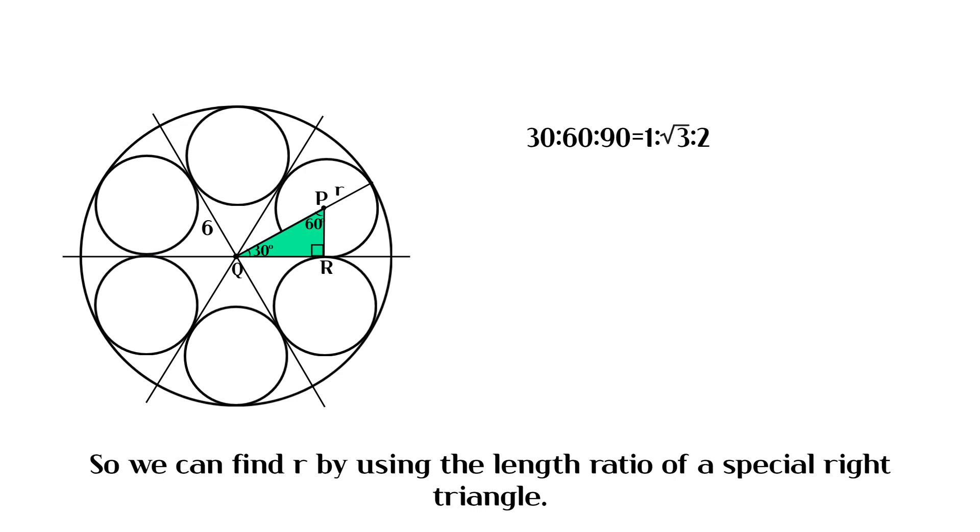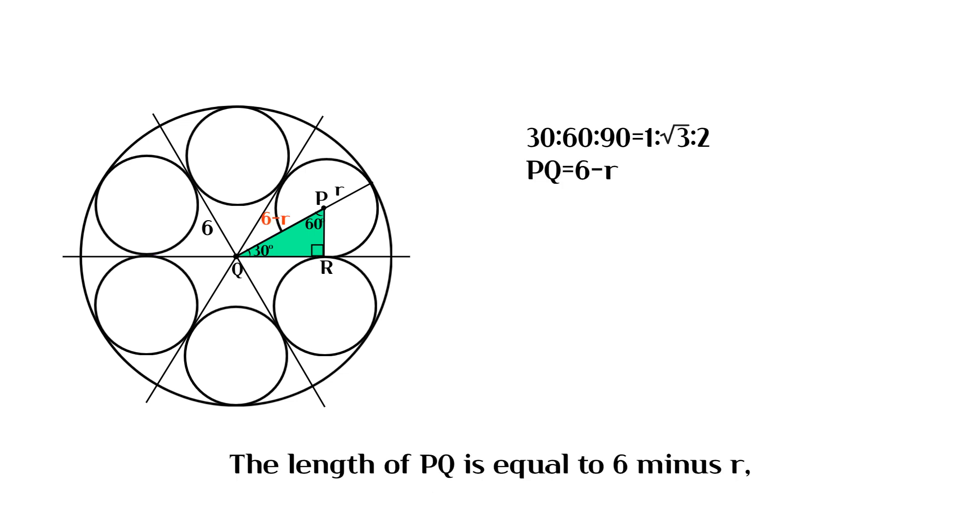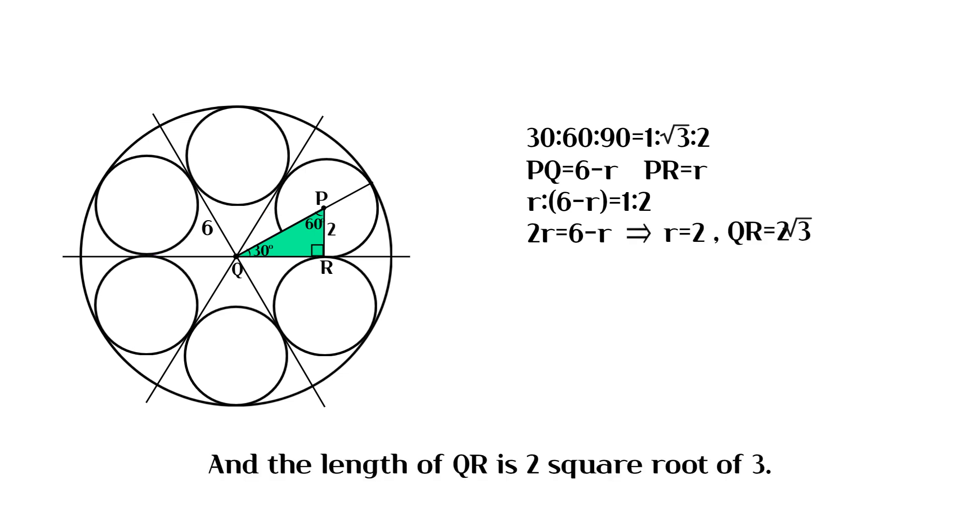So we can find R by using the length ratio of a special right triangle. The length of PQ is equal to 6 minus R, and the length of PR is equal to R. And the length of QR is 2 square root of 3.